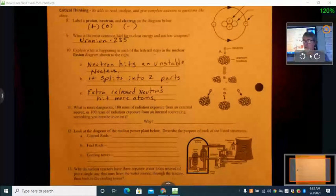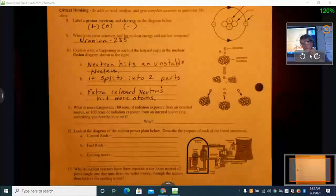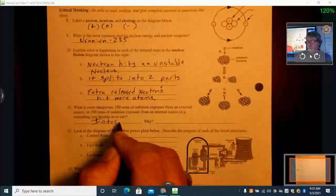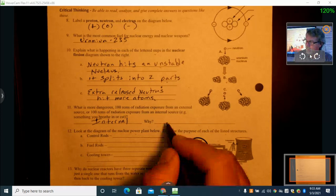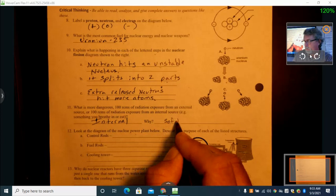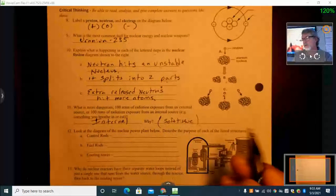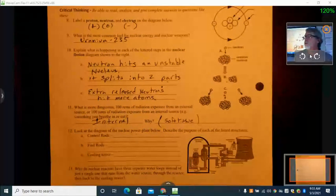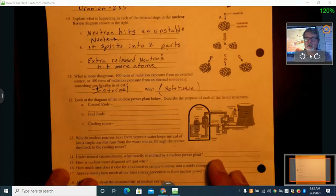So what is more dangerous? 100 realms of radiation exposure from an external source or 100 radiation from an internal source? And internal, it's much more dangerous. So this is the same amount of radiation, but it's much more dangerous if it's inside of you, because of the soft tissue. Like your stomach or your liver or anything like that. Your lung is the soft tissue, and it can penetrate that tissue much easier. All right, quickly look at this diagram here.